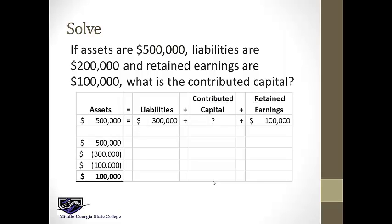Here we have the two pieces of equity broken out: contributed capital and retained earnings. I put assets, liabilities, and retained earnings in their spots, then identify the missing piece. I subtract the $300,000 and the $100,000 from the right side to solve, giving $500,000 less $300,000 less $100,000, which leaves $100,000 as contributed capital. I can put that $100,000 back into the spot and check — if those three things don't add up to $500,000, I know to go back and check.